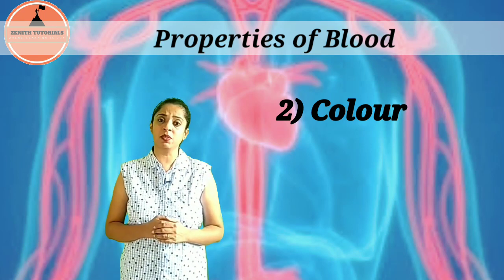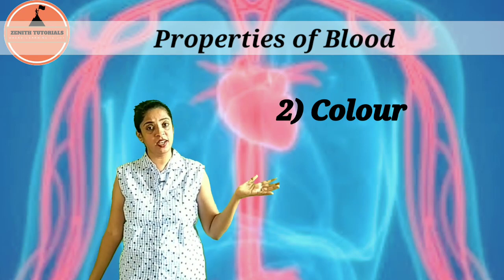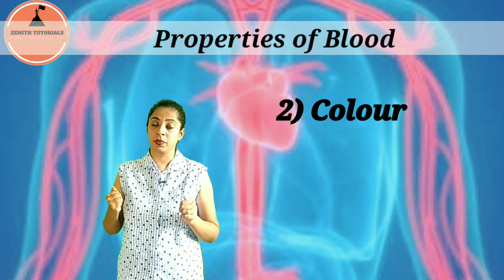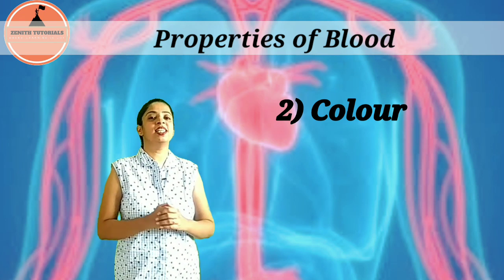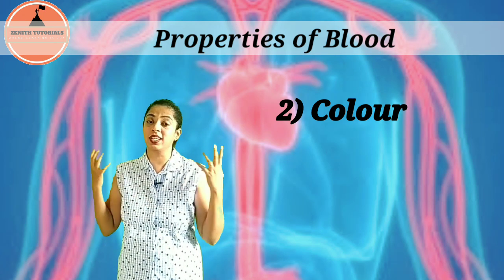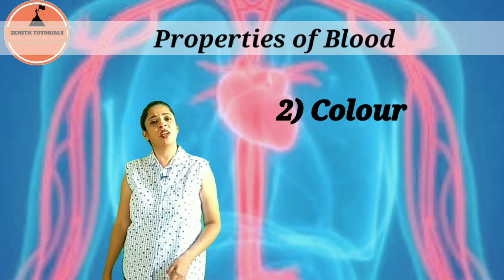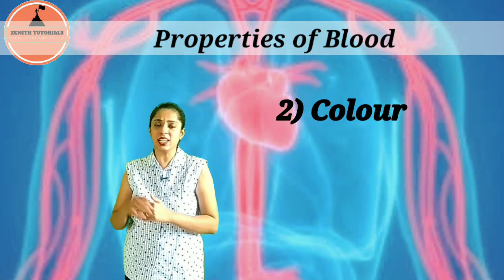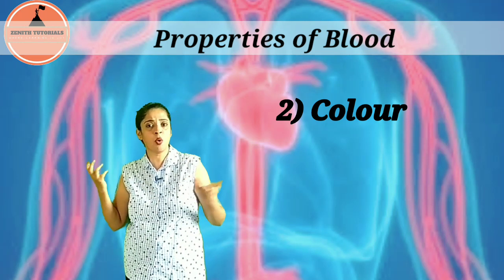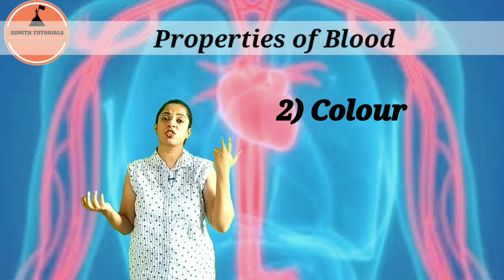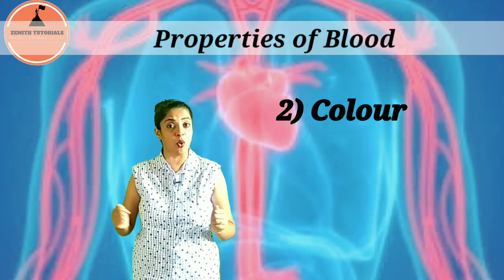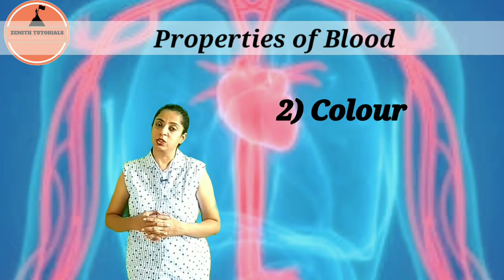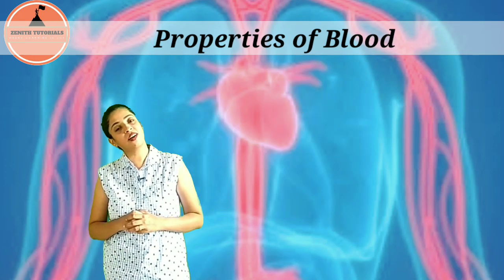In many diagrams, oxygenated blood is shown as red and deoxygenated blood is shown as blue, but this is not exactly correct. Oxygenated blood is bright red and deoxygenated blood is dark red. When you look at prominent veins — especially in the hands of older people — you may see a bluish appearance, but that is not because the blood is blue; it is due to the less thick muscular walls of the veins. The blood is actually dark red in color.